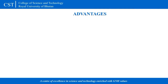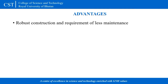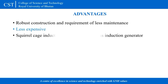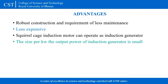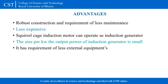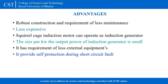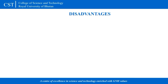The advantages of an induction generator include: robust construction with less maintenance required; it is less expensive; a squirrel cage induction motor can operate as an induction generator; the size per kilowatt output power is small, requiring less external equipment; and it provides self-protection during short circuit faults.